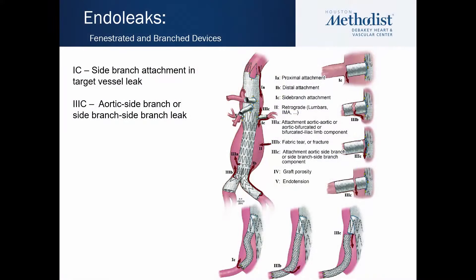Moving on to the newer endoleak classification from the Society of Vascular Surgeons' reporting standards regarding branched and fenestrated endografts — Dr. Oderich chaired this committee. The additions in this setting include a type 1c endoleak, where the distal branched endograft is not sealed in its attachment target vessel, and a type 3c, where either the aortic side branch attaching to the aortic endograft or a side branch overlap is leaking. The rest of the endoleak classification remains relatively the same.